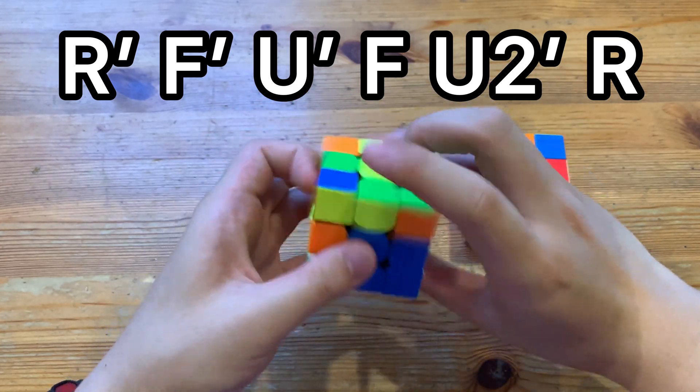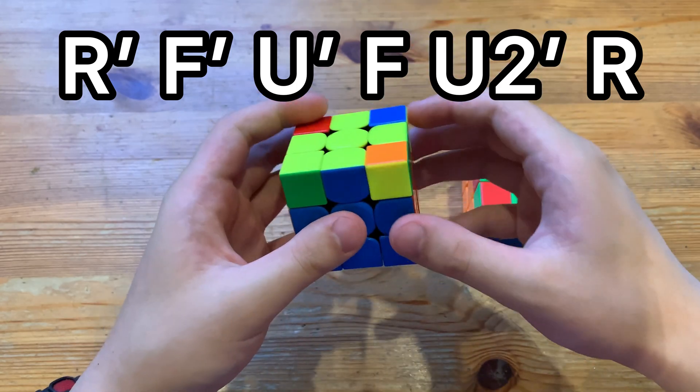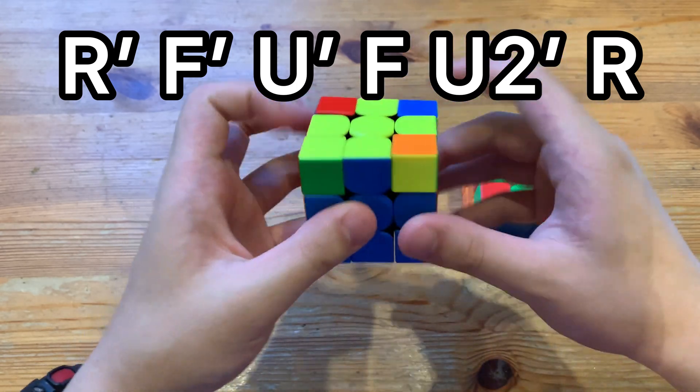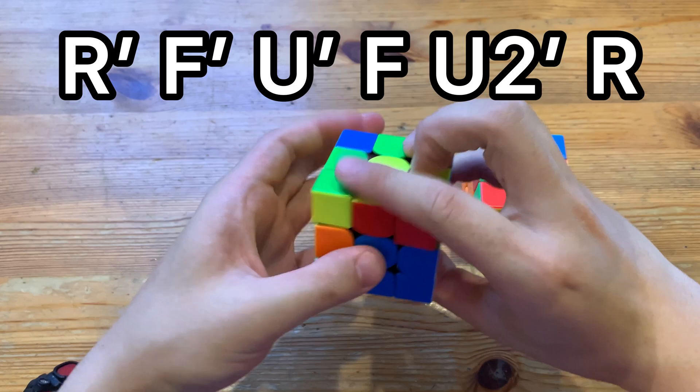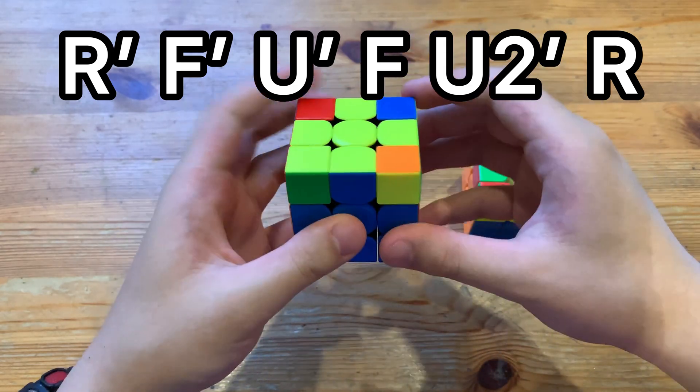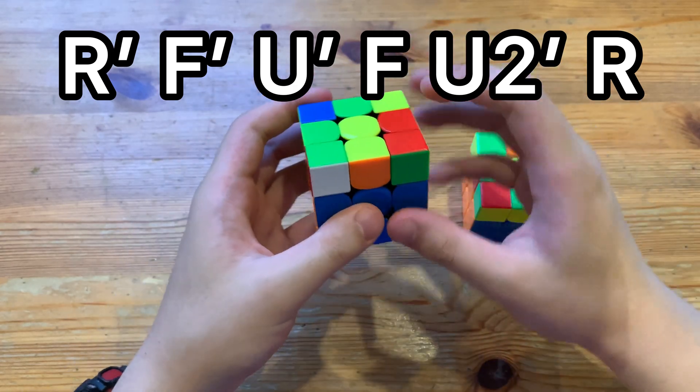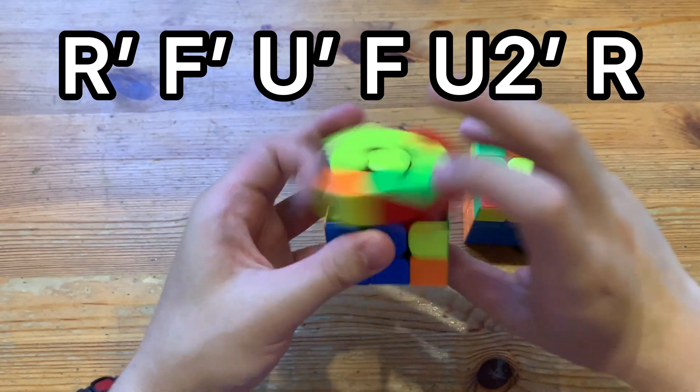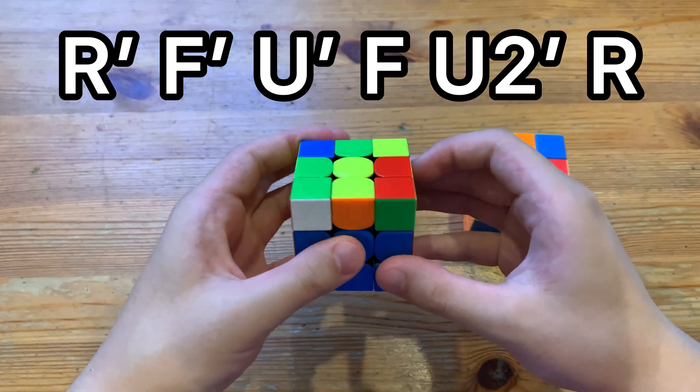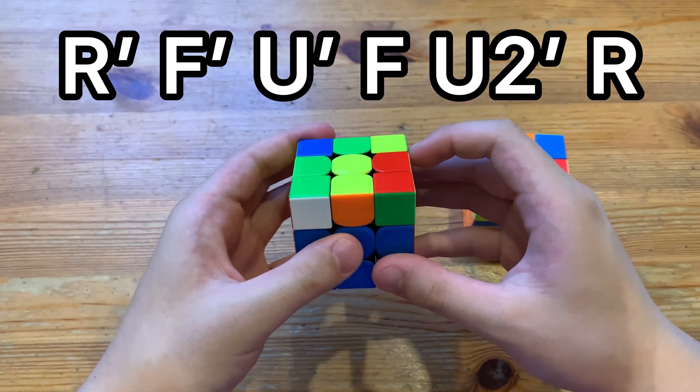And done at full speed, it'll look like this. And it's just as fast as the R'U' solution, but it solves ZBLS, where you have this one edge oriented. And as you can see, super fast and super easy to execute.